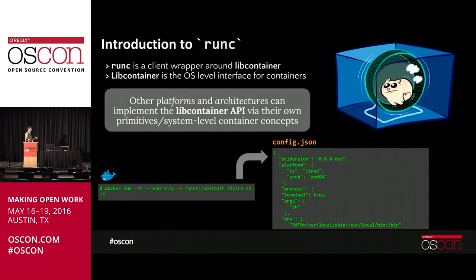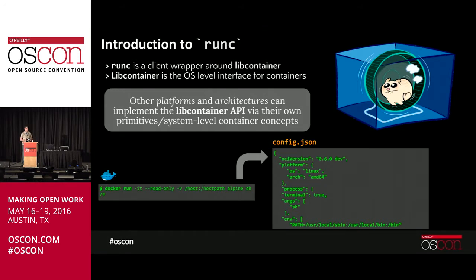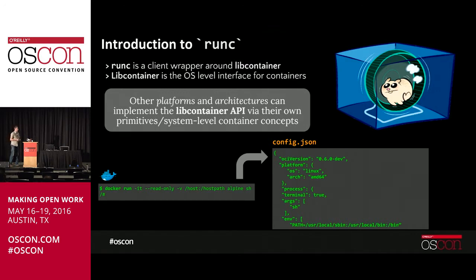Run-C was simply a client binary that called the libcontainer API. So you could say 'runc start' and have a simple basic container. Given that libcontainer has an API, other platforms and other architectures can take that API and make their own compliant binary using their own primitives and system-level container concepts.